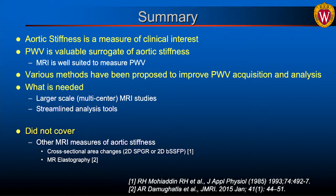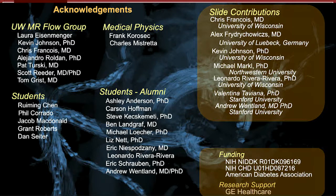In summary, aortic stiffness is a measure of clinical interest, and MRI is very well suited to measure it. Various methodologies exist to improve this, especially higher temporal resolution. What is really needed are larger-scale multicenter MRI studies to show significance of these measures and streamlined analysis tools. Other algorithms for aortic stiffness — such as distensibility, cross-sectional area change, or MRI elastography — were not covered; the focus was on measures derived from hemodynamic measurements. Thank you to my group, collaborators, and funding agencies.